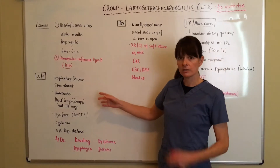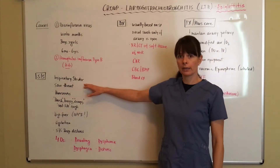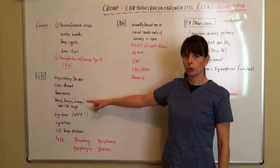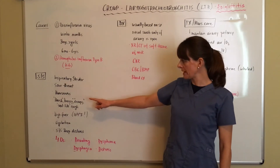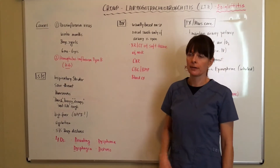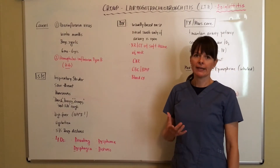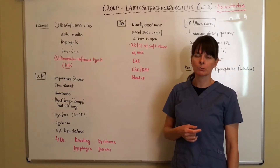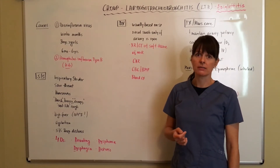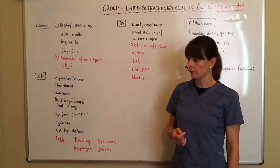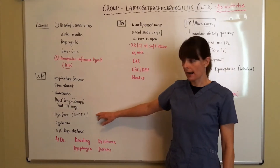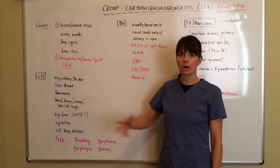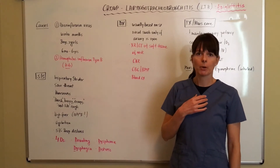Because of all this inflammation, the patient might be complaining of a sore throat, have a hoarse voice, and then have this harsh, brassy, croupy, or seal-like cough. Once you've heard it, it's very easily distinguishable — it's very loud and it does sound like a seal barking. It will often be accompanied by high fever and agitation.